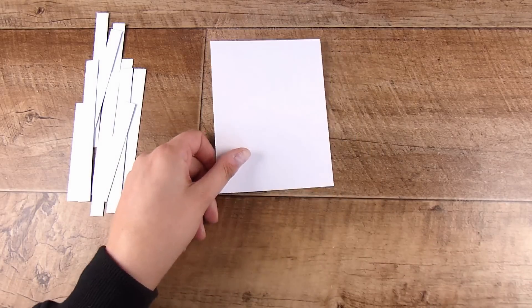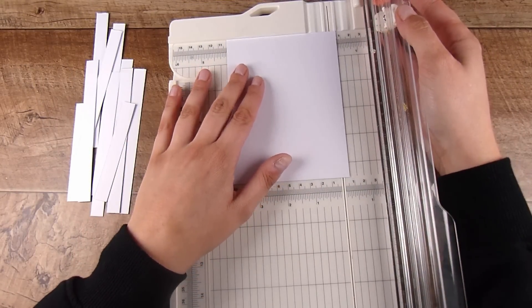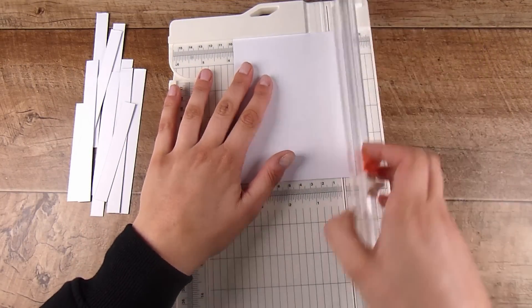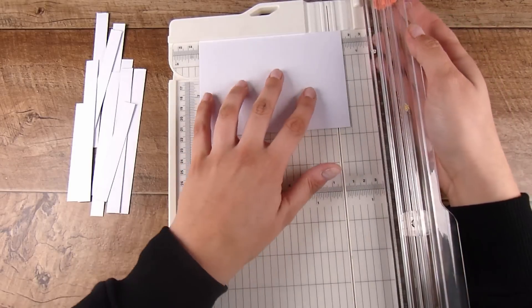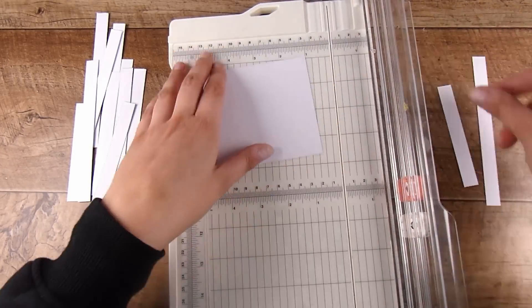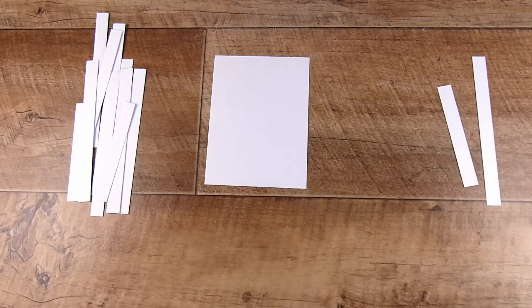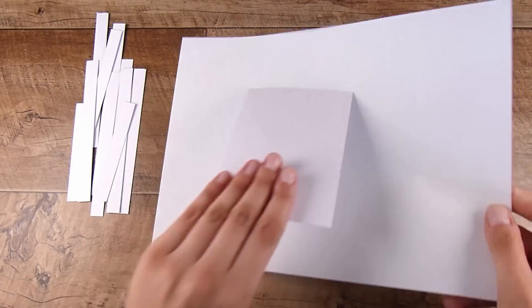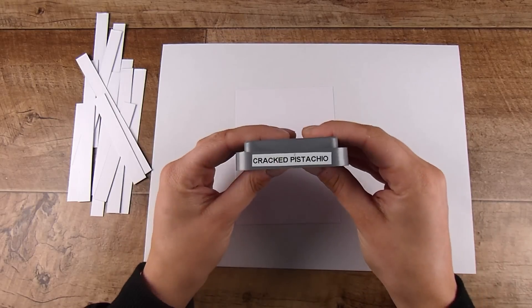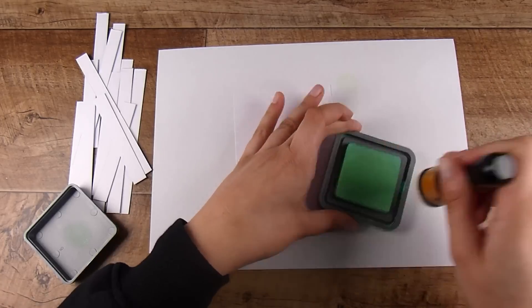These ones here are generally created when I cut down my card fronts to be three and three quarters by five inches. I always start with a four and a quarter by five and a half inch piece and often I cut them down just like this. These are fantastic for sentiment strips, but once I get a pile of them I like to move them on and this is one very easy way to go about it.